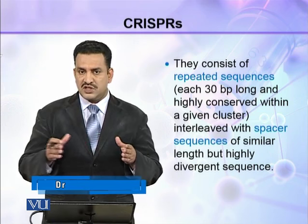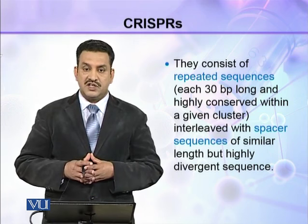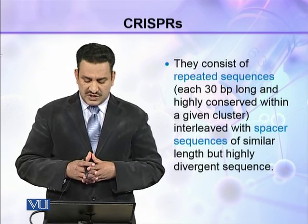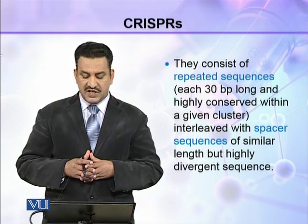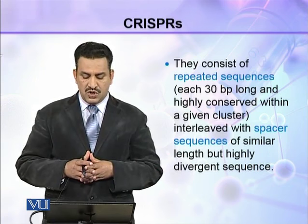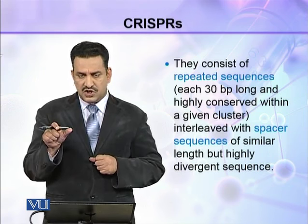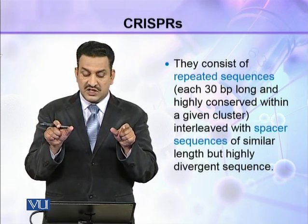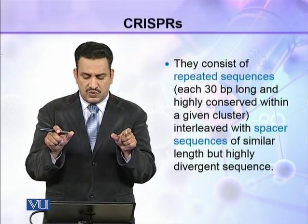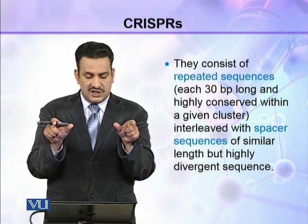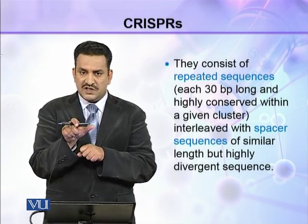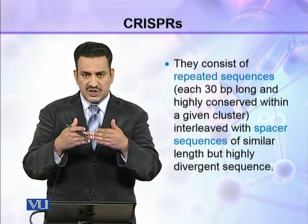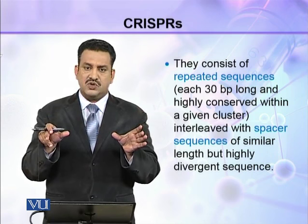In a single cluster, these repeated sequences are highly conserved and are interleaved with spacer sequences of similar length but highly divergent sequences. In a CRISPR, the repeated sequences are very conserved — they have similar sequence — and they are interleaved with spacer sequences in between.